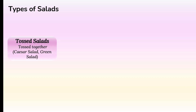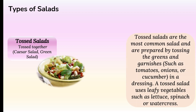Now let us come to the types of salads. Internationally, the types are somewhat different from the classifications. The first type is tossed salads — named so because they are tossed together. Good examples include Caesar salad and green salad. Tossed salads are the most common and are prepared by tossing greens and garnishes such as tomatoes, onions or cucumber in a dressing. They use leafy vegetables such as lettuce, spinach and watercress, all mixed together.